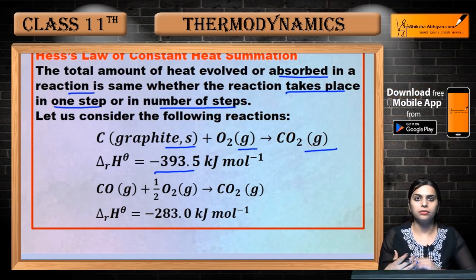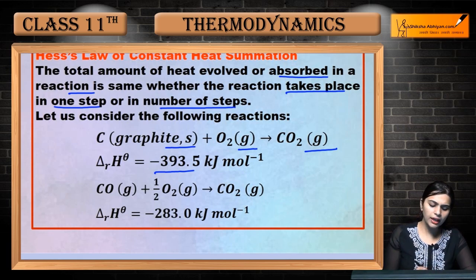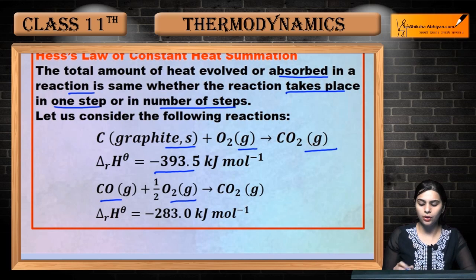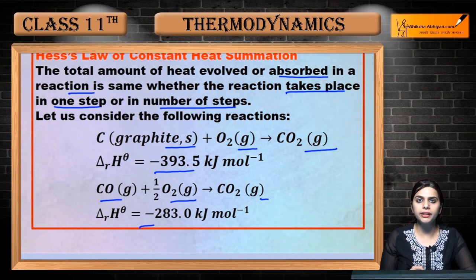What is heat evolved? The minus sign indicates heat is evolved. And again, if you burn carbon monoxide with oxygen, you get carbon dioxide gas with an enthalpy change of minus 283.0 kJ per mole.